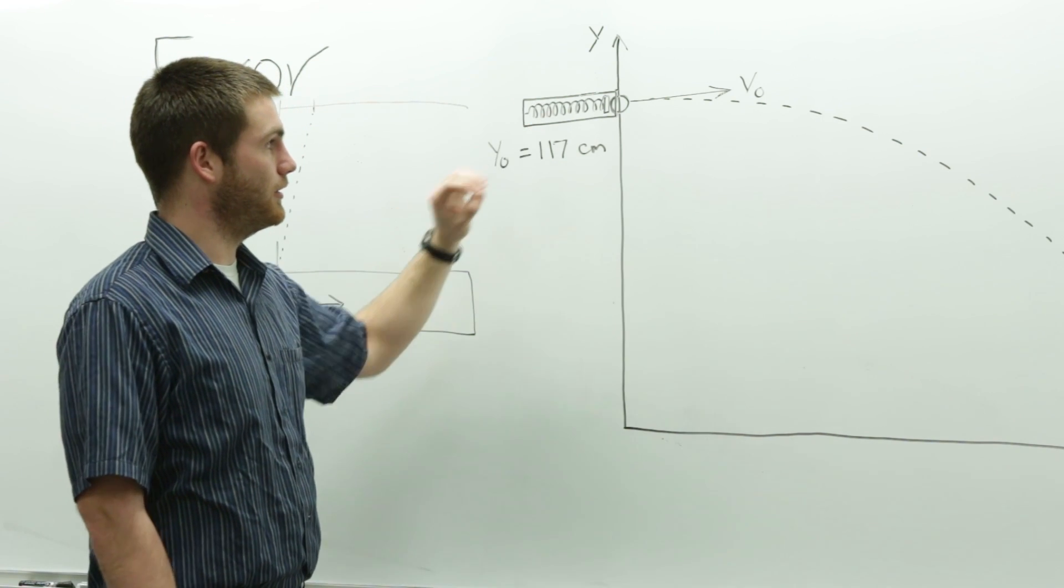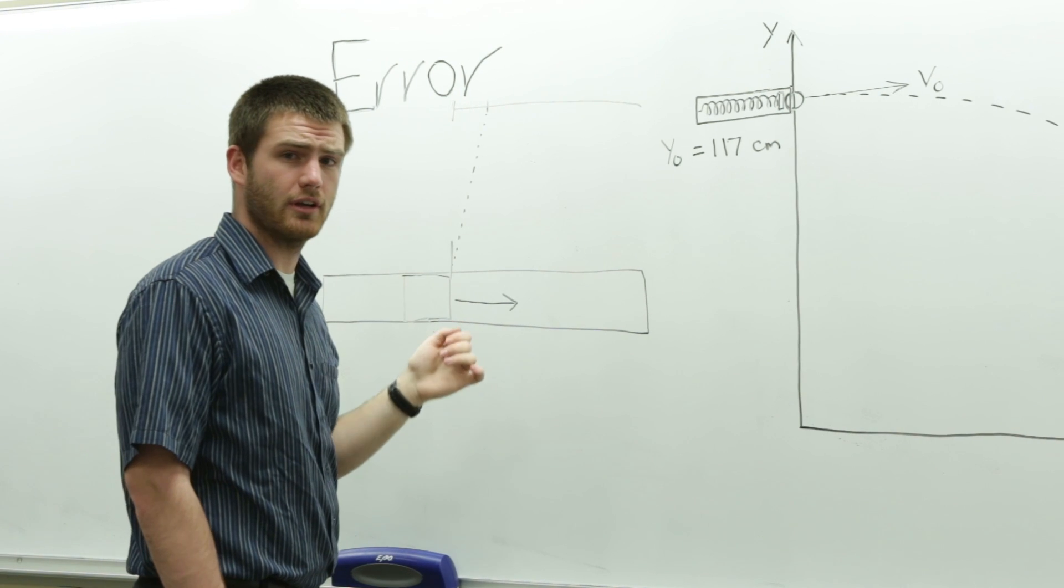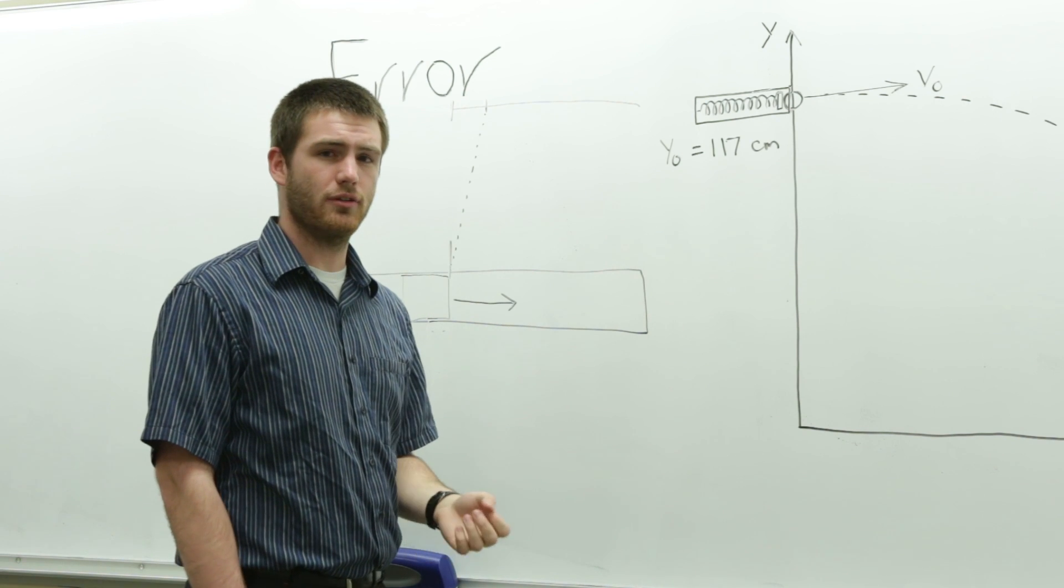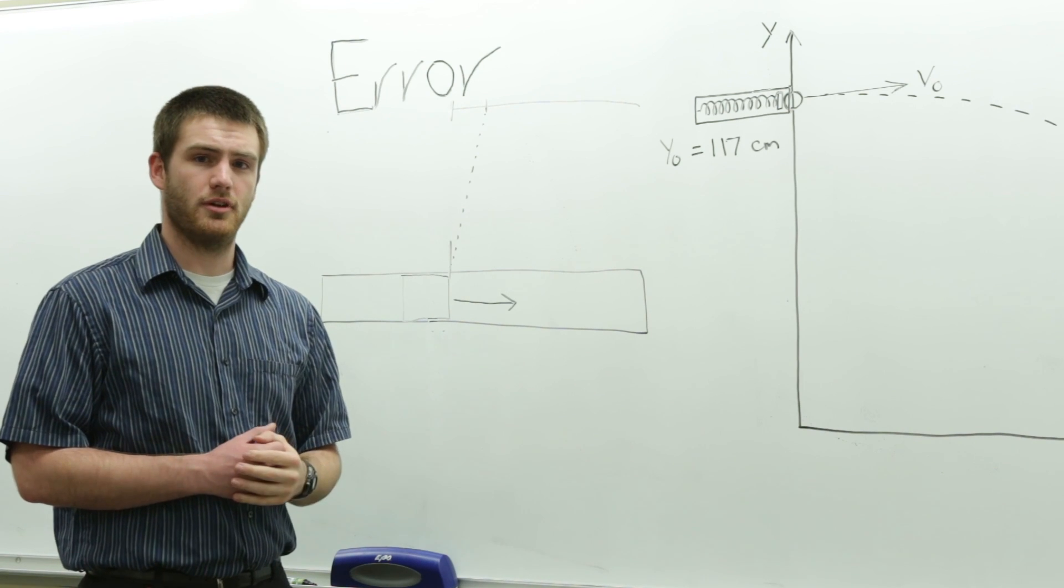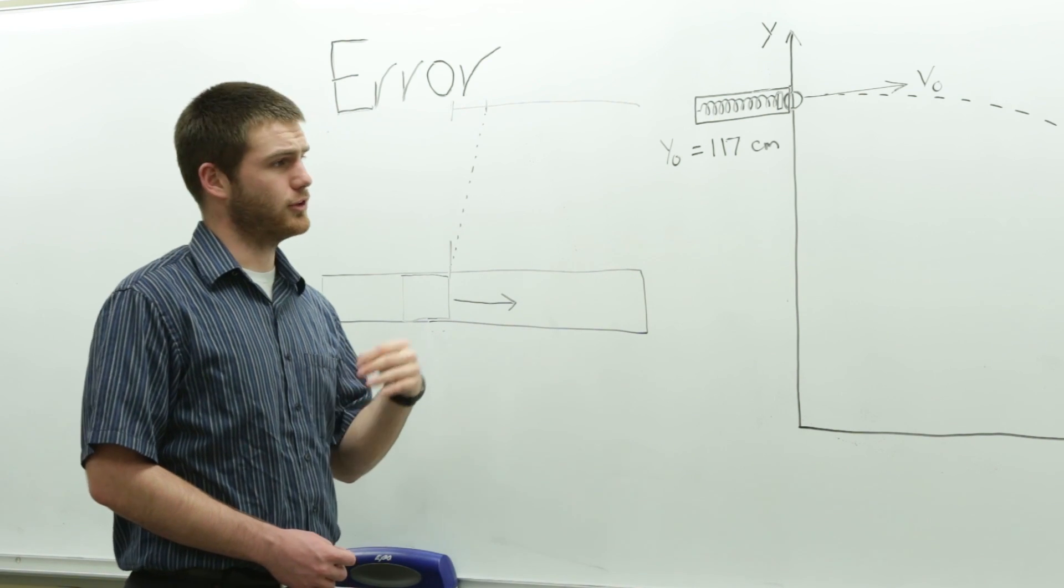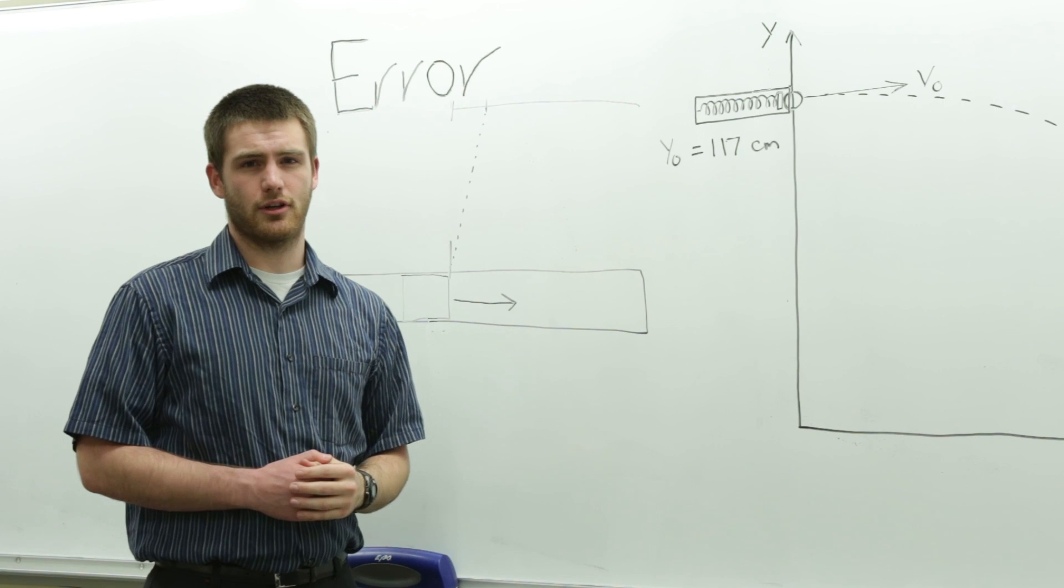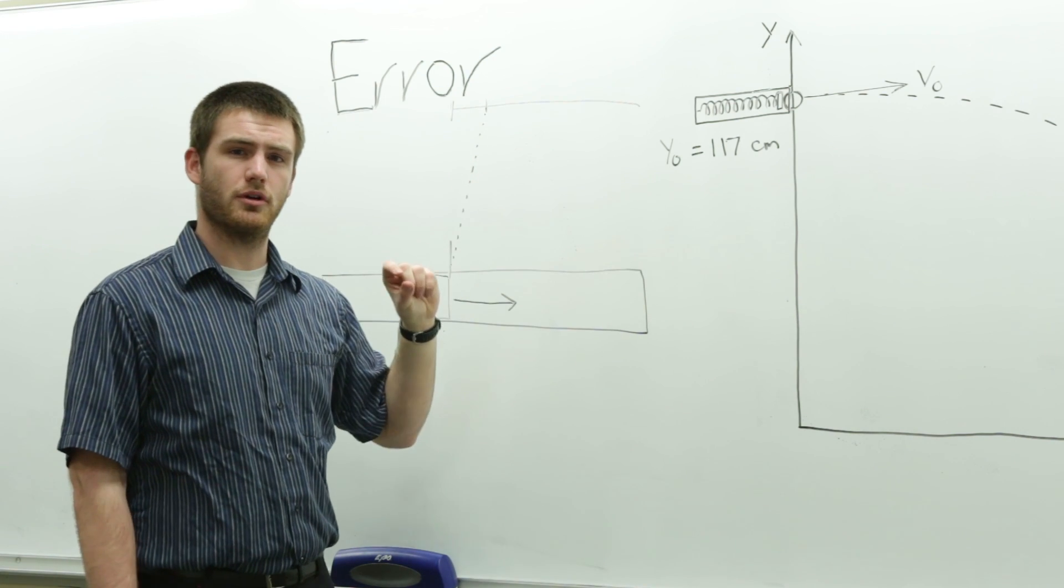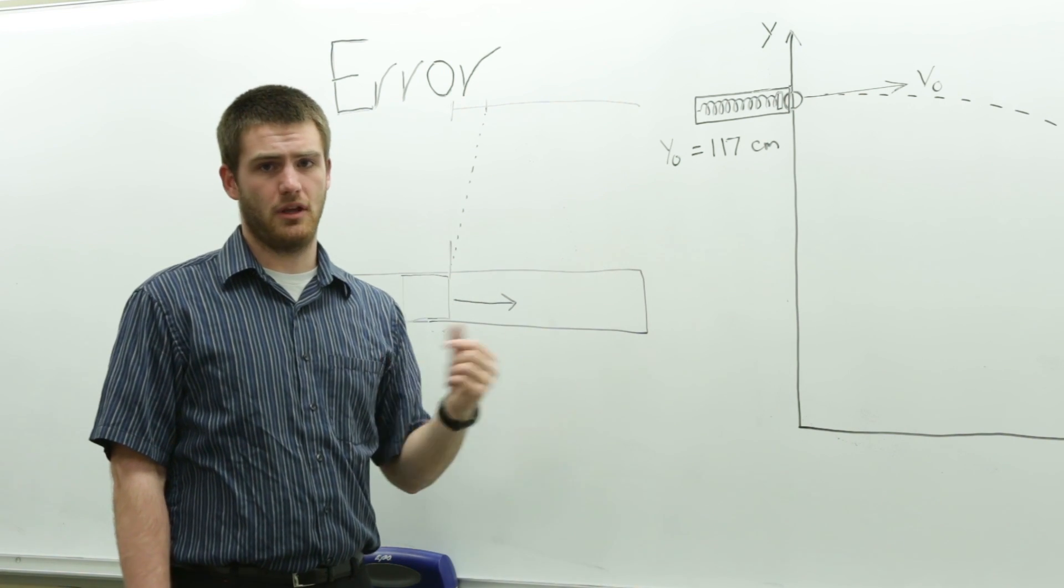So besides the initial velocity angle being slightly high and the human error of pulling the string, you also have air resistance to deal with. However, since it was a heavy ball and it wasn't going very fast, that wasn't a huge concern of ours. So there's where most of the human errors come in. You also have human error in the measurements and how we were measuring the x distance and the y distance. And there could be an error in the ultrasonic sensor when we were getting the z velocity. And there were several measurement errors that could be added to that also. But overall, this was a fairly accurate lab.